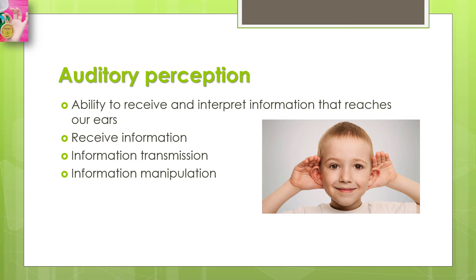Let's start with the first process: receiving information. When an object vibrates — for example, when a human talks — the vocal cords vibrate and the waves produced by this action are transmitted through the air or other means. When these waves reach the inner ear, certain cells are activated. Then the next process, information transmission, occurs: those cells produce a signal that is transmitted through different nuclei.